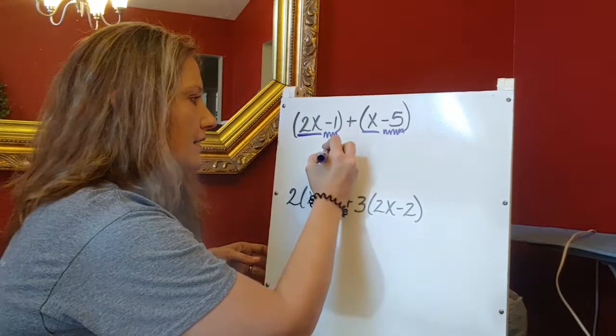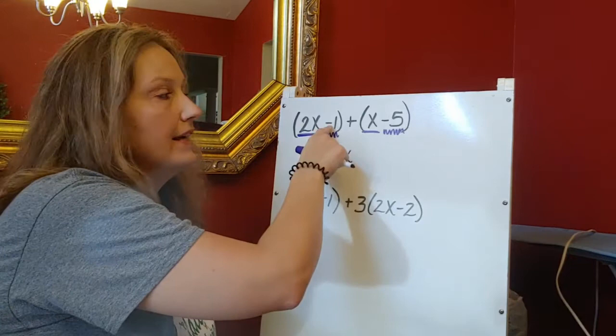But I am going to add these. I'm going to take this 2x plus this x, and that gives me a 3x.